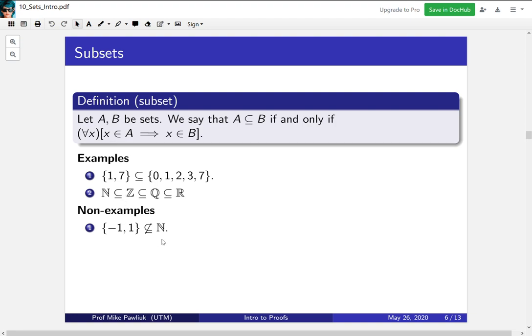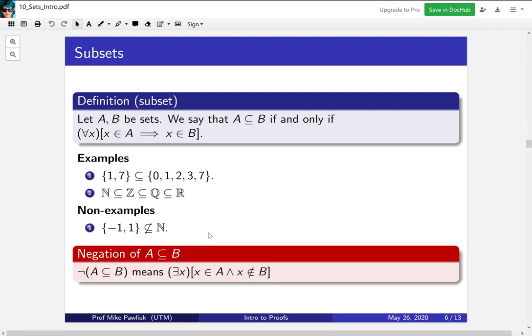So to show that this is not a subset, it's enough to point out, hey, −1 is in the set on the left, but it's not in the set on the right. To write this out explicitly, the negation of A ⊆ B is there exists x ∈ A and x ∉ B. So to show that you don't have a subset, you need to find an element that's in the first thing, but not in the second thing.